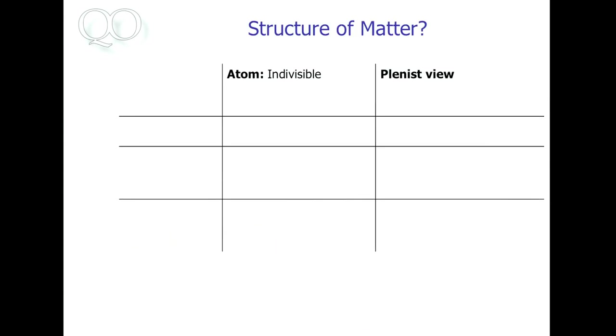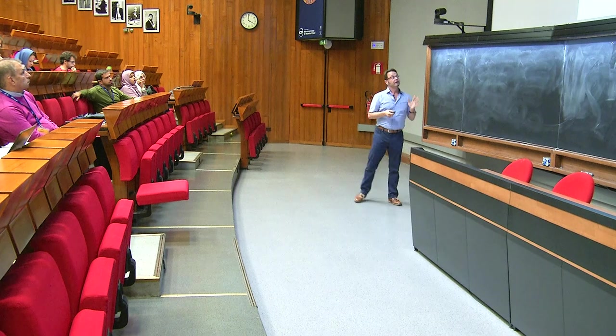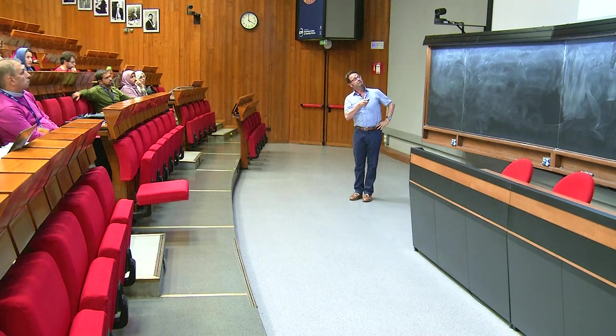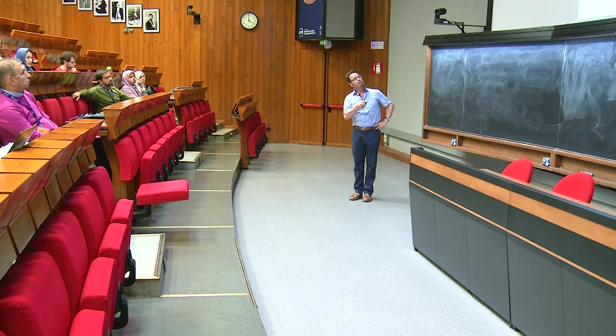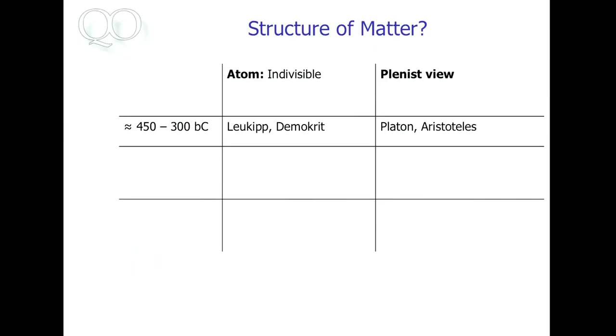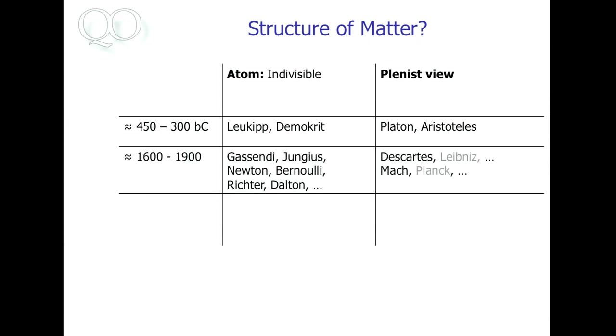So the smallest thing you can have. There is some indivisible atom. When you chop up this desk here into smaller and smaller pieces, you end up with the smallest pieces and then you cannot chop it up anymore. So that's a view many ancient Greeks had. But there was the opposite view where people thought space is uniformly filled with matter.